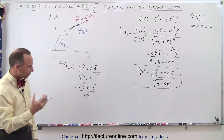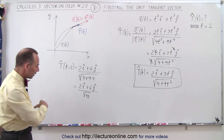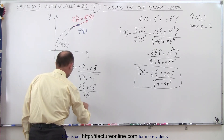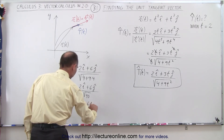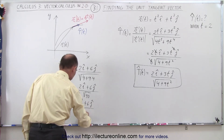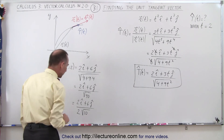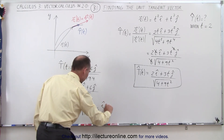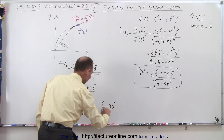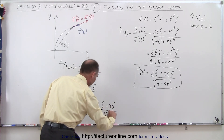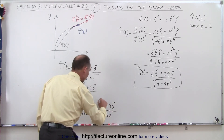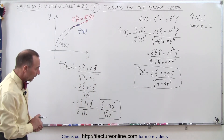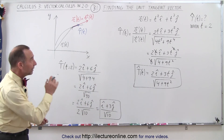Now you can factor out a 4 from 40 and take that out of the radical, giving a 2. So this equals 2i plus 6j, divided by 2 times the square root of 10. The 2 divides in, so this becomes equal to i plus 3j, divided by the square root of 10. That would then be the unit tangent vector when t is equal to 2.